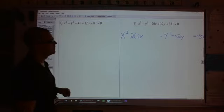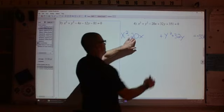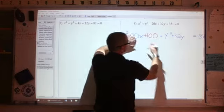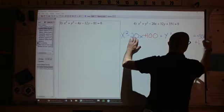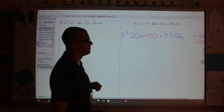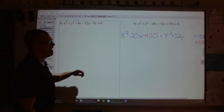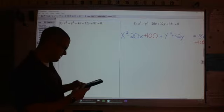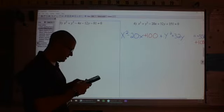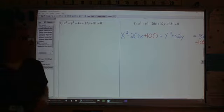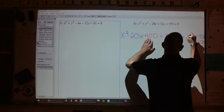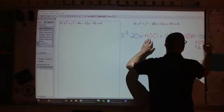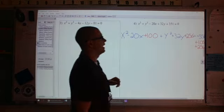Half of 20 is 10. 10 squared is 100, so plus 100 to both sides, so plus 100 over here to keep it balanced, equivalent. Half of 32 is 16. 16 squared, I want to say it's 256, but let's check. It is 256. We're going to add 256 to both sides.